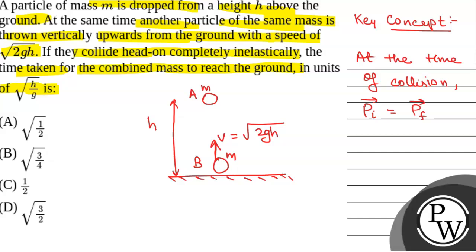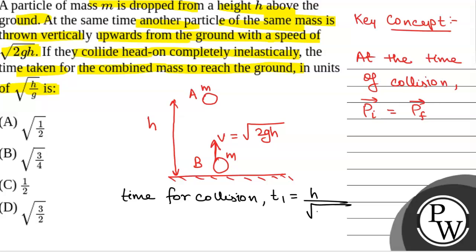The time for collision t1 will be equal to h divided by root(2gh), that is h divided by v = root(2gh).